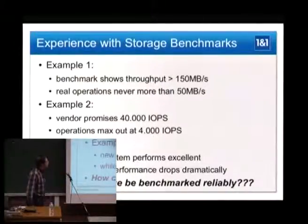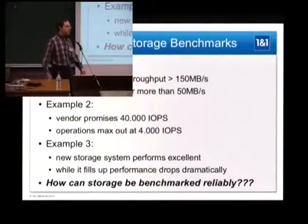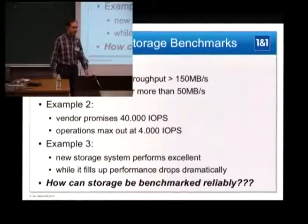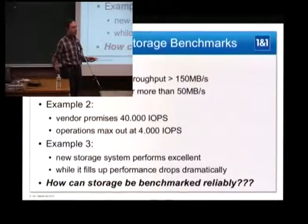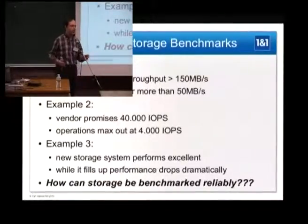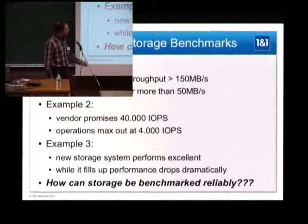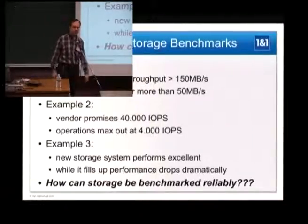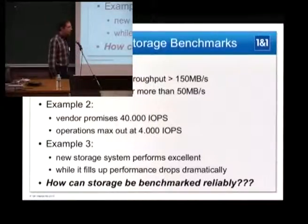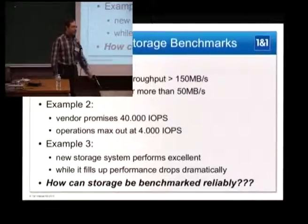Example two: you've got a vendor of some system around and they say, 'Our super high-end storage system delivers 40,000 IOPS no matter what.' After that you notice that in operations it's like 10% of that maximum, never more, although your applications would like to have a bit more than that.